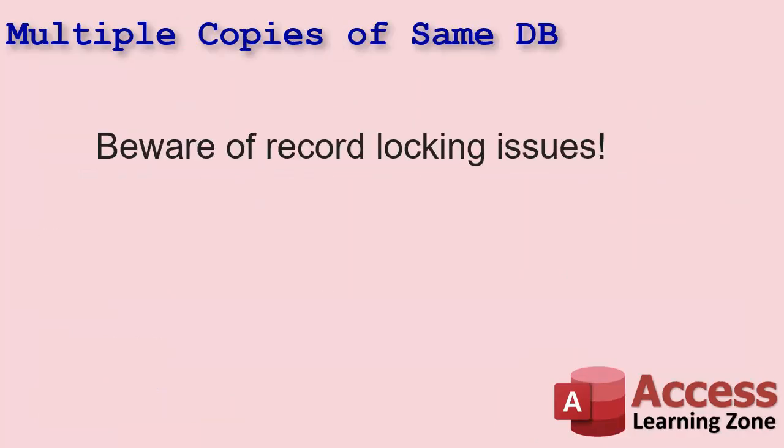Before we get started, I do want to mention that if you're doing something that has a lot of input/output — a lot of read/writes, a lot of table records that you're changing — be very careful of using multiple copies of the same database, because the way that Access handles record locking and file locking, if you've got one database processing multiple copies, it could cause collisions.